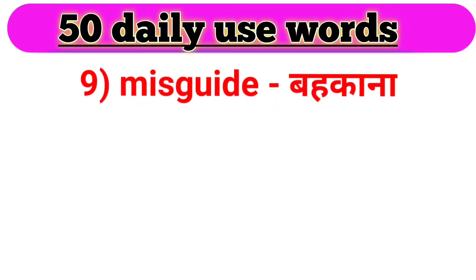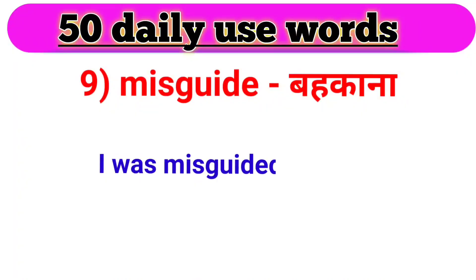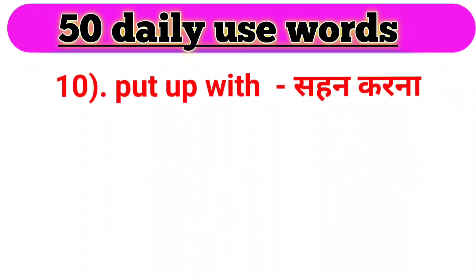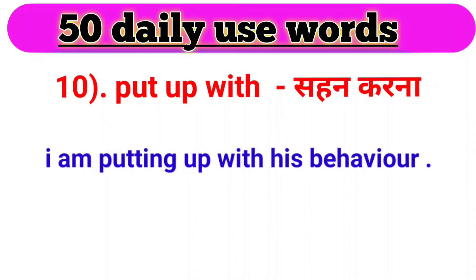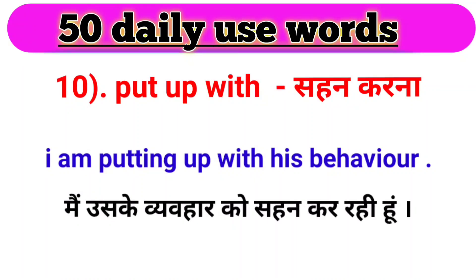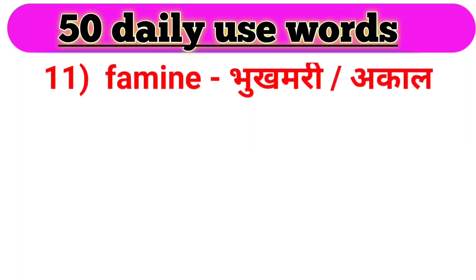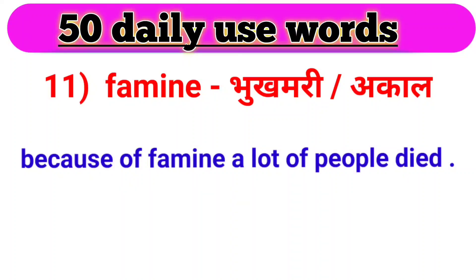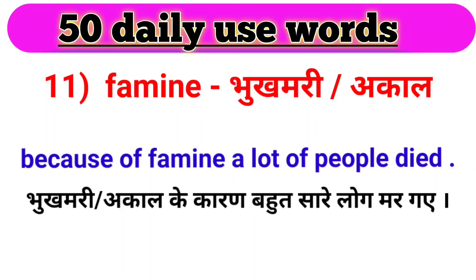Next word, we have misguide. Misguide ka matlab hota hai behkana. For example: I was misguided by him. Mujhe uske dwara behkaya gaya. Agla hamaara ek phrasal verb hai — put up with. Put up with ka matlab hota hai sahna/sahan karna. For example: I am putting up with his behavior. Main uske vyavhar ko sahan kar rahi hoon. Next word, we have famine. Famine ka matlab hota hai bhukhmari ya akal. For example: Because of famine, a lot of people died. Bhukhmari ke kaaran bohut saari log mar gaye.